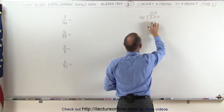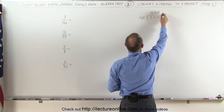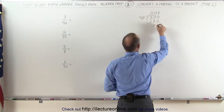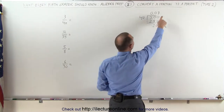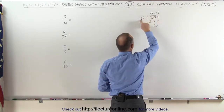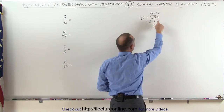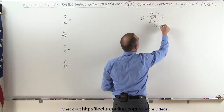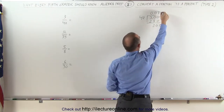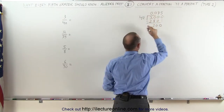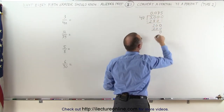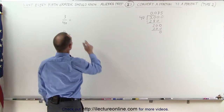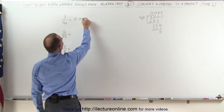Now 40 goes into 300 — it does 7 times. 7 times 40 is 280, so subtract that from 300 we get 20. 7 times 40 is like 7 times 4 and add a 0: 7 times 4 is 28, add a 0 you get 280. Now we add another 0 and carry that 0 down. 40 goes into 200 exactly 5 times because 5 times 40 is 200, remainder is 0, which means that 3 divided by 40 is equal to 0.075.